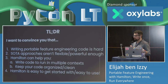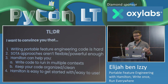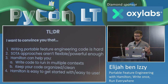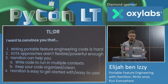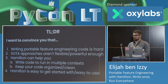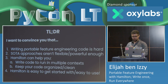What I want to tell you about today: first, I want to talk about the challenges around feature engineering and why writing portable feature engineering code is hard. Then I want to convince you that state-of-the-art approaches generally aren't flexible or powerful enough. Hamilton, the open source library, can help you write code to run in multiple contexts and keep your code organized and clean. Hamilton is easy to get started with and easy to use.